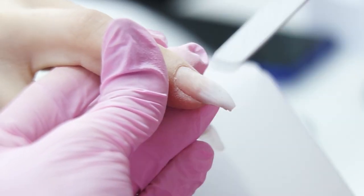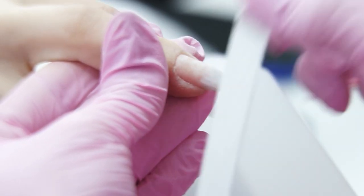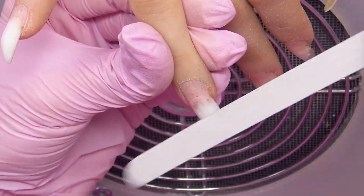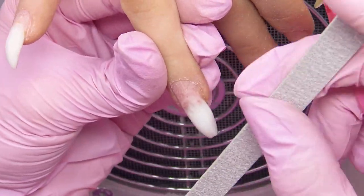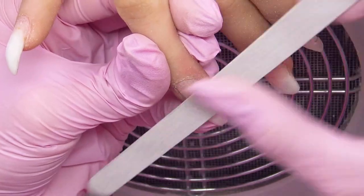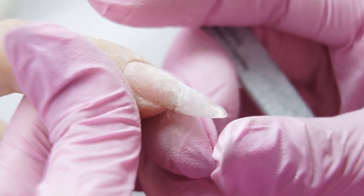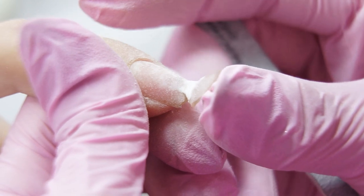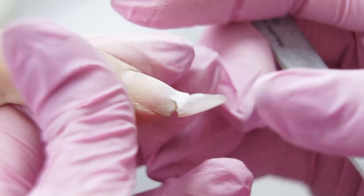I'm matting the surface with a file, removing the transition from the natural nail to the artificial material, using a 180 grit file. Remove all the liftings so they don't appear again. During filing, I see that there's no point in keeping the free edge on the index finger, since it peels off completely.